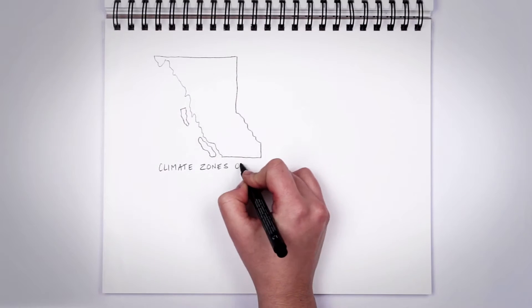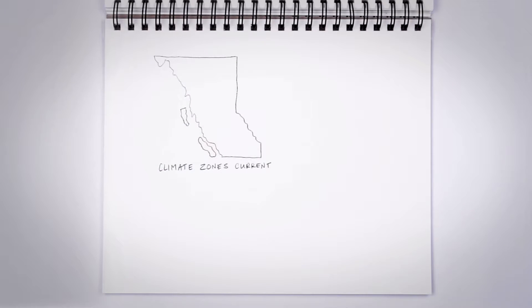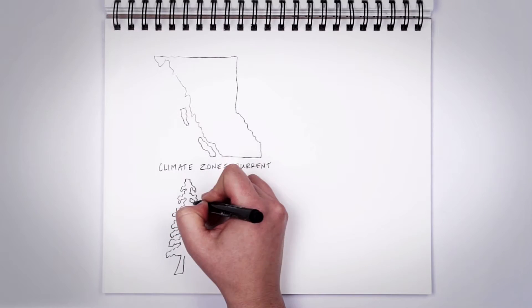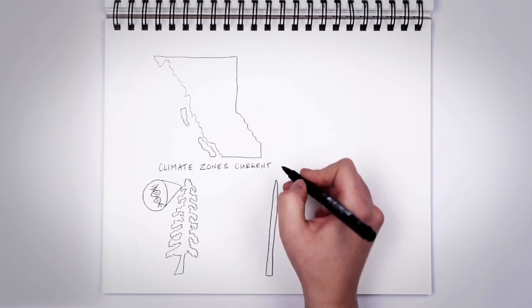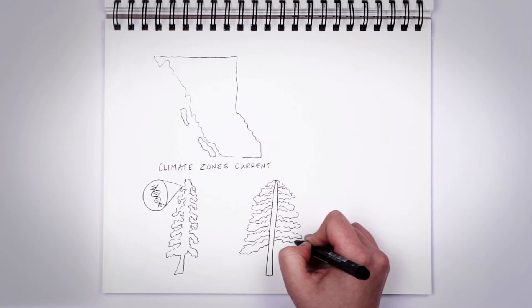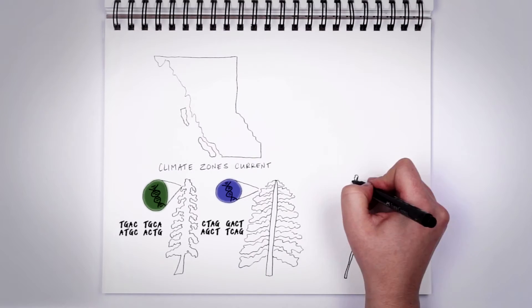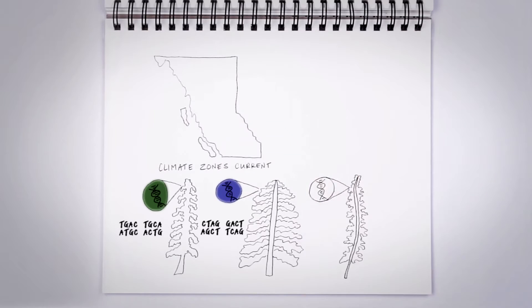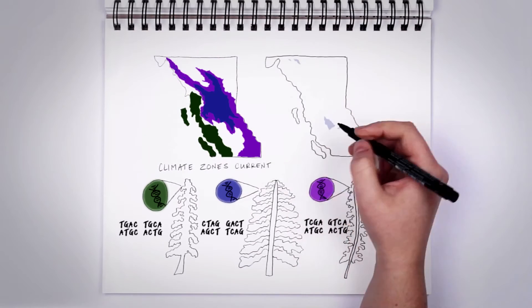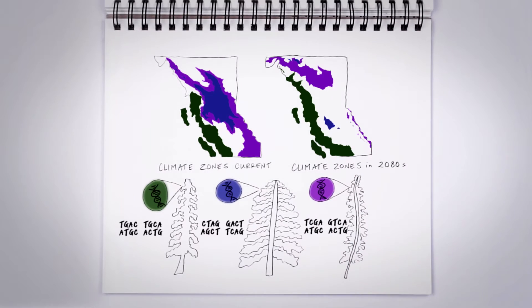Looking farther ahead, genomics can help us determine which trees are best adapted to climate change. Genomics helps us see which genes are linked to climate-related traits like drought tolerance. Scientists are already using that information, along with climate mapping data, to plant trees that are most likely to thrive in the climates we expect 60 years from now.